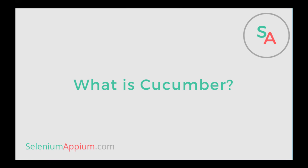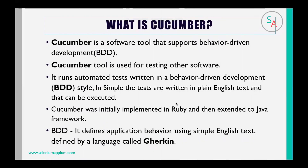Let's talk about what is Cucumber. Cucumber is a software tool that supports behavior-driven development. It is used for testing other software. It runs automated tests written in a behavior-driven development style. In Cucumber, the tests are written in plain English text and these tests can be executed.